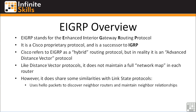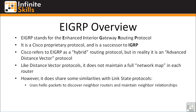EIGRP uses hello packets to discover neighbor routers and maintain neighbor relationships. Unlike RIP, which just broadcasts everything and everybody that hears the advertisement imports those routes into the routing table, EIGRP has the concept of neighbor relationships like OSPF. EIGRP also uses an algorithm to determine the best loop-free path through the network — unlike RIP or other distance vector protocols that use hop count, EIGRP uses an algorithm to figure out which path has the least latency, least delay, and most bandwidth available.